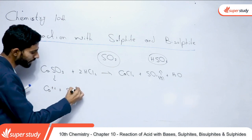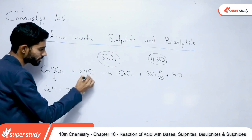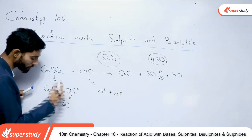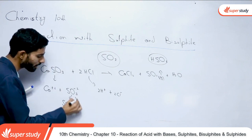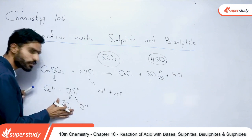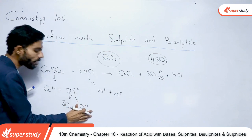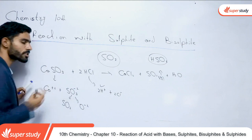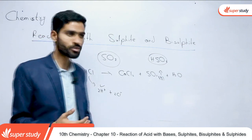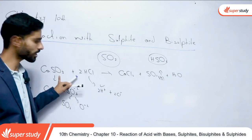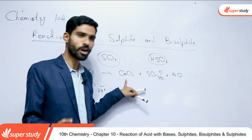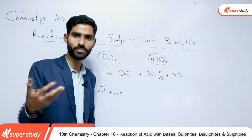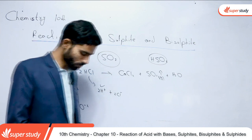Calcium sulfide ionize hone par Ca²⁺ aur SO₃²⁻ deta hai. Hydrochloric acid H⁺ ions aur Cl⁻ deta hai. Sulfite ions SO₃²⁻ aage toot kar SO₂ aur O²⁻ banta hai. SO₂ ek major product hai jo gaseous form mein system se evolve ho jata hai. O²⁻ react karta hai H⁺ ions se aur water banta hai. Cl⁻ ions, calcium ions ke saath milkar CaCl₂ banate hain.